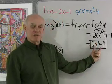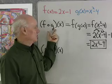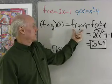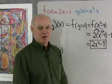Plus another negative 1 is minus 9. So, there's a new function that's the composition of these two old functions. f composed with g of x stands for f of g of x, and when I work it out, I end up with 2x squared minus 9.